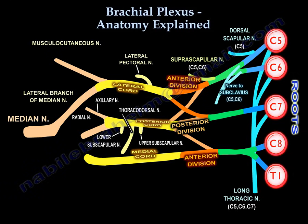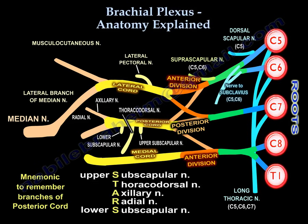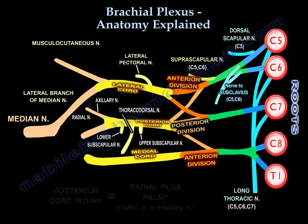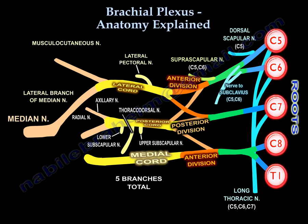The posterior cord ends as the axillary nerve — supplying the teres minor and deltoid — and the radial nerve, which supplies all muscles of the posterior arm and forearm. Some use the word STARS to remember the branches of the posterior cord. In a posterior cord injury, you will have radial nerve palsy — drop wrist — plus axillary nerve palsy.